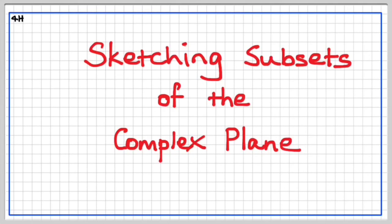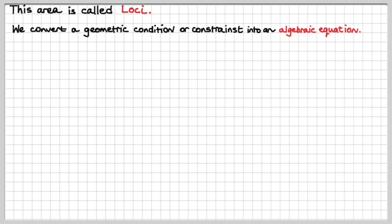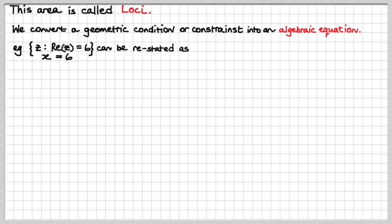Hello ladies and gentlemen. Today we're going to have a look at sketching subsets of the complex plane, and a very fascinating area it is too. This area is called loci, which comes from the Latin word meaning a path. Locus is a path, and loci is the plural. What we're doing is we're taking a geometrical condition or constraint and turning that into an algebraic equation, which we can then go on and sketch on the Argand diagram.